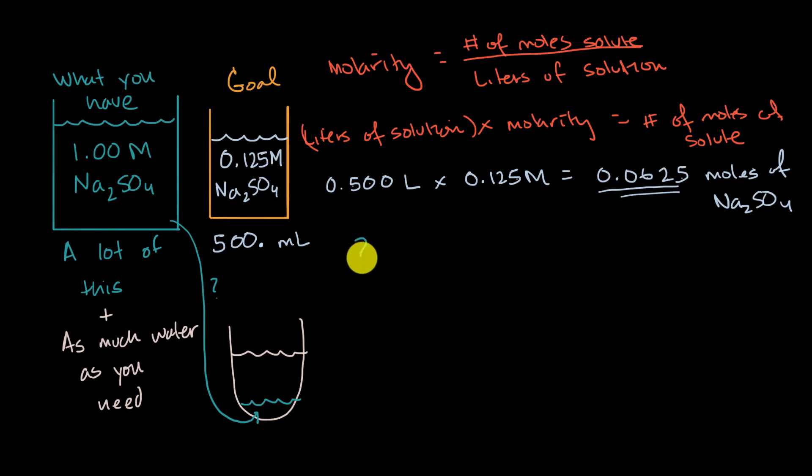So one way to think about it is, there's some mystery volume of our original solution we need, and we know what its concentration is, it's a one molar concentration, that when I take this product, I'm going to get 0.0625 moles of sodium sulfate.